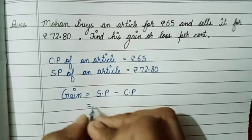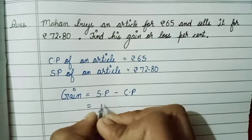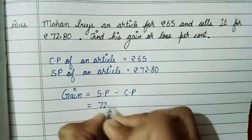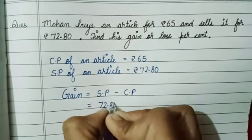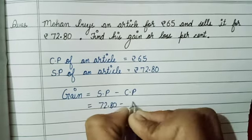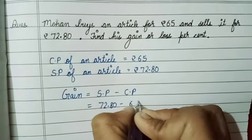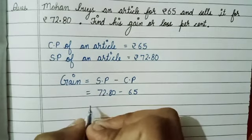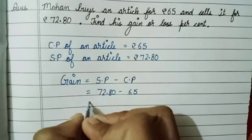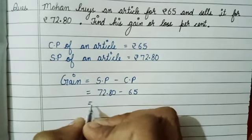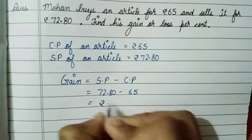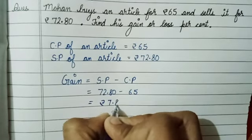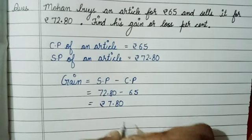Now with the help of this formula, find gain. Put the values: SP which is 72.80 minus CP which is 65. After subtracting this we get rupee 7.80.